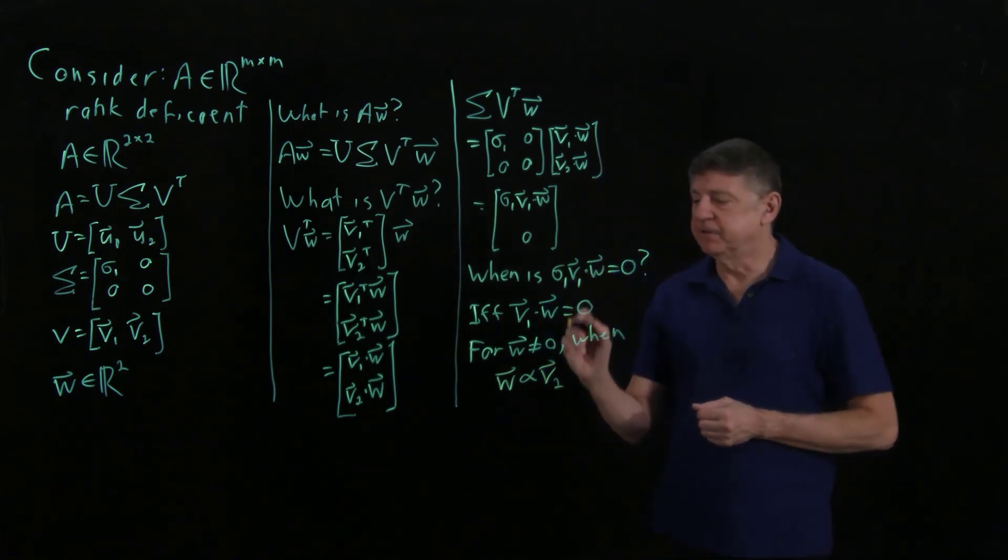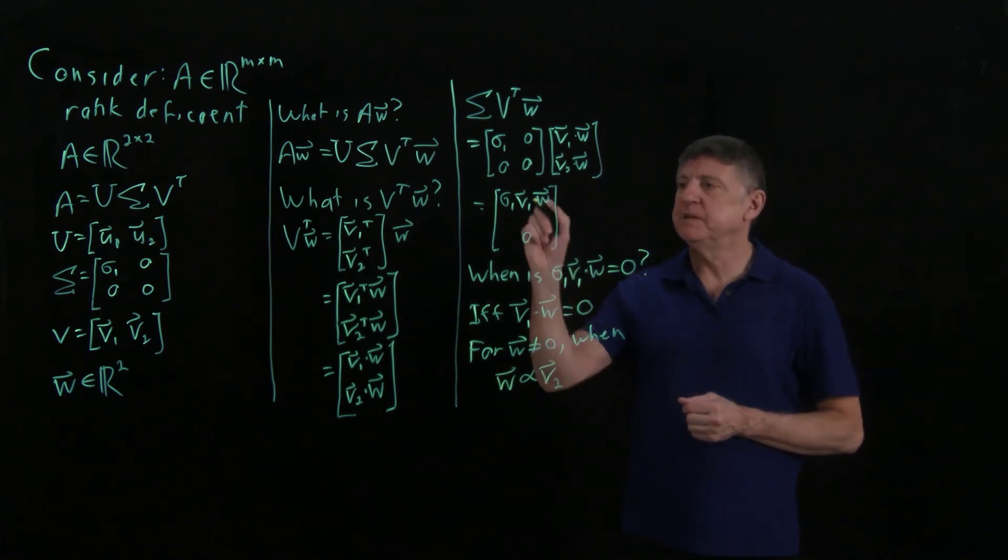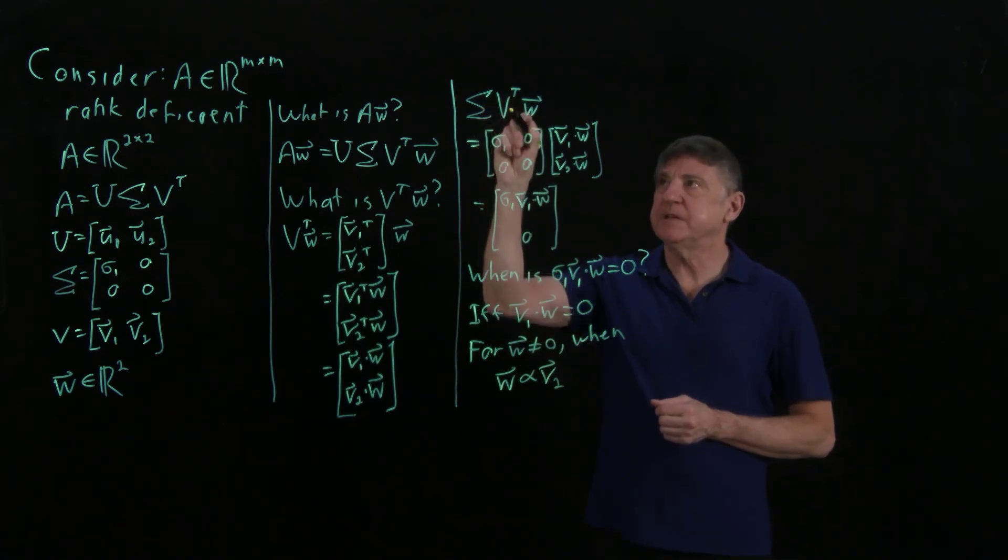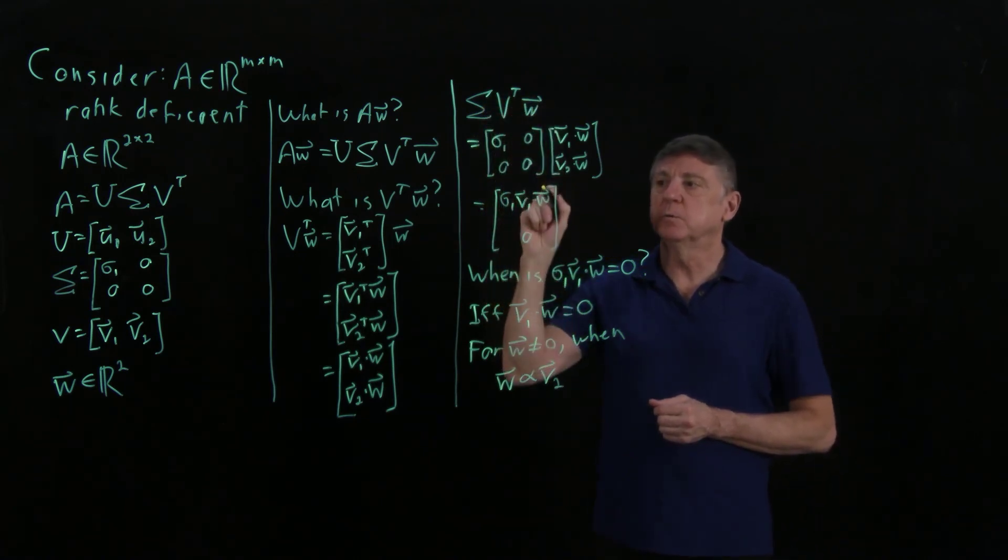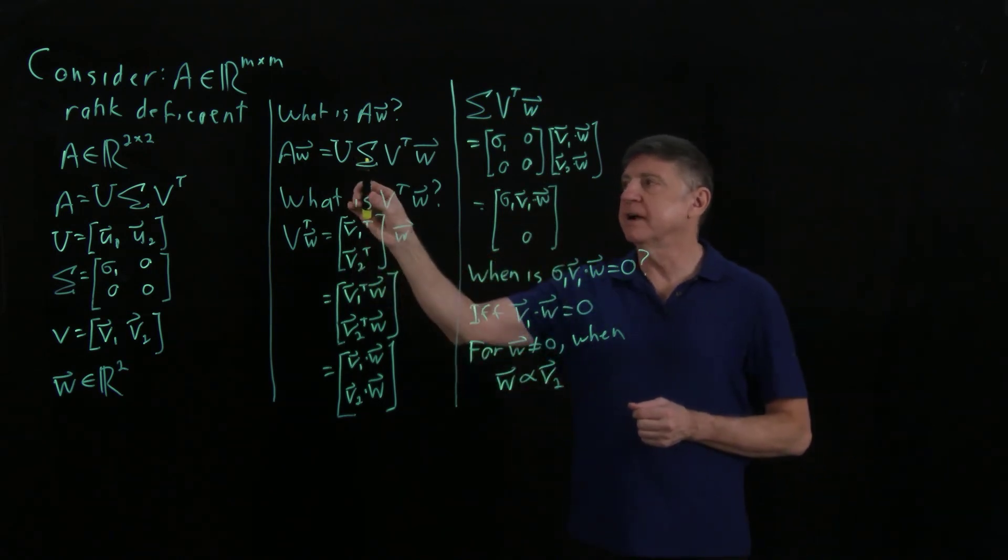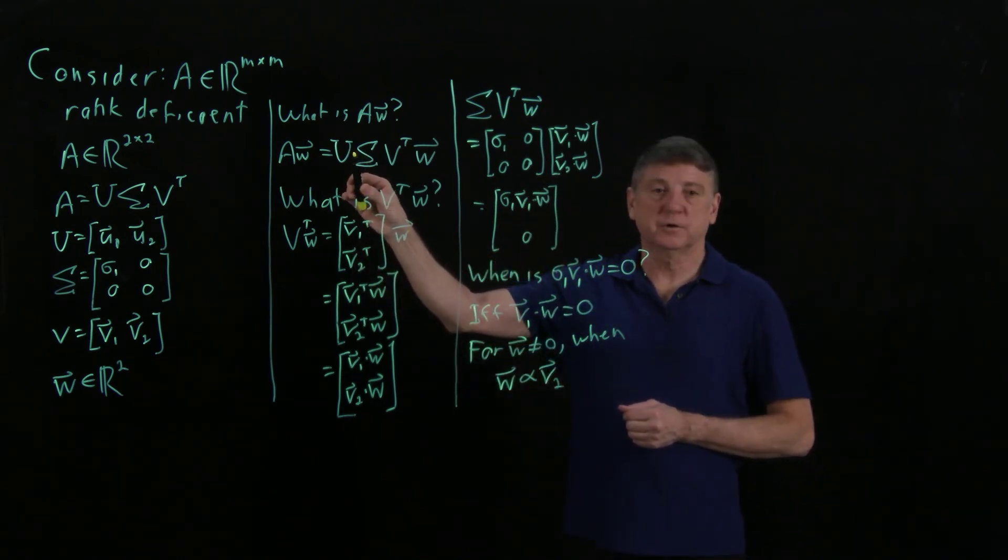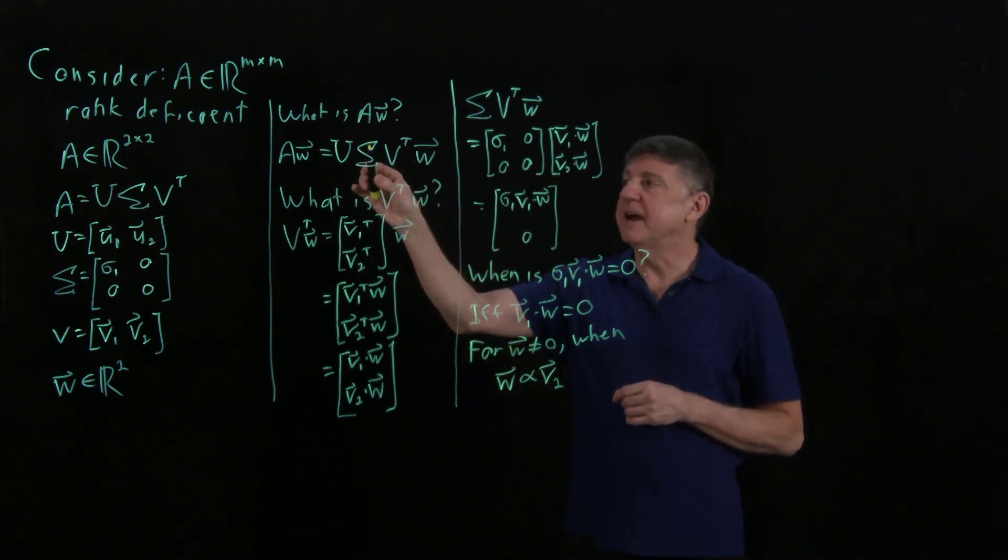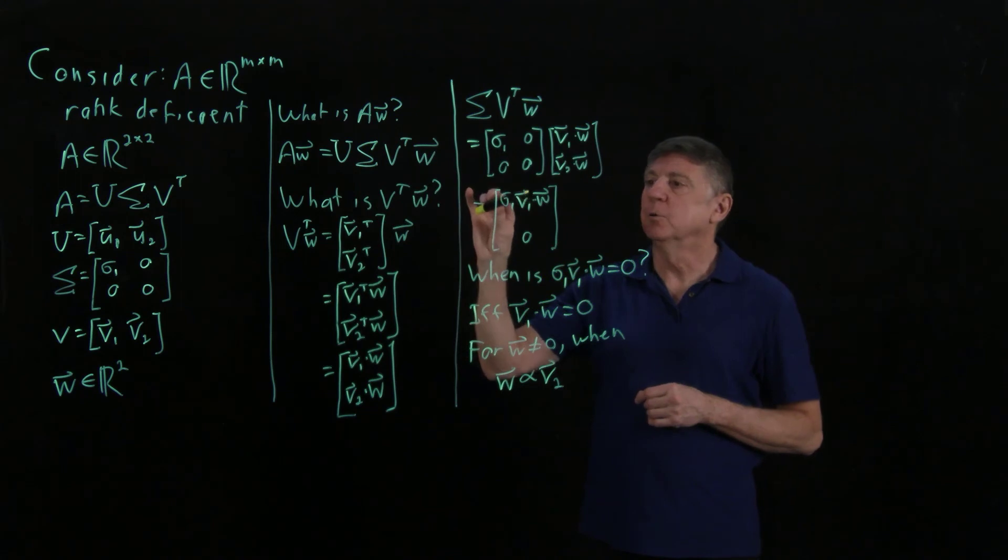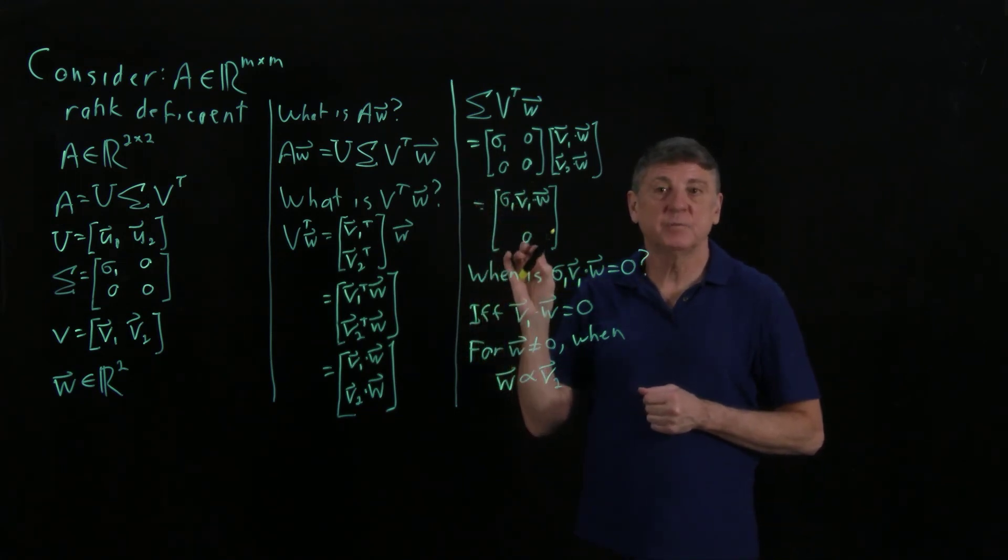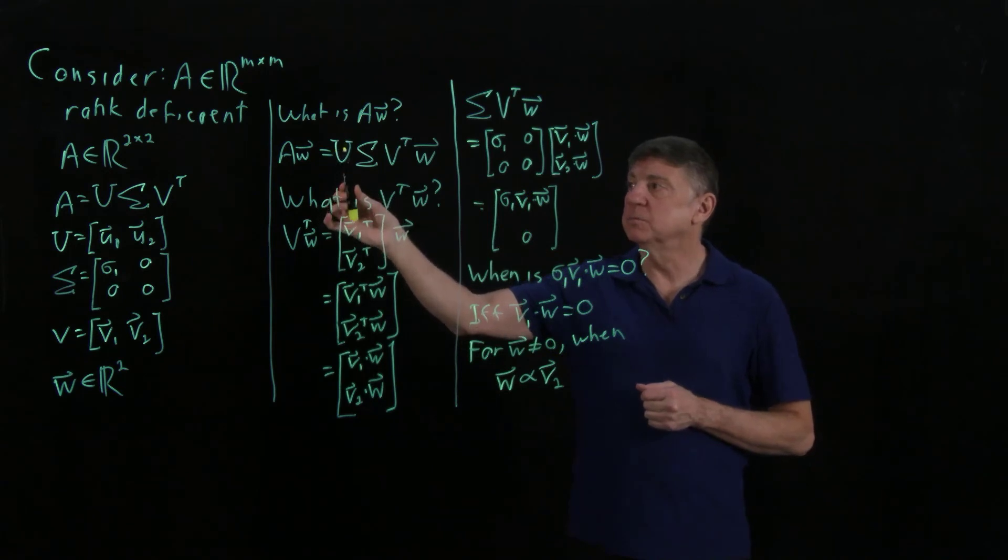And if W is proportional to V2, then this will, then sigma times V transpose times W will be the 0 vector. And then when I multiply the 0 vector into an orthogonal matrix U, I'll get the 0 vector out. Because that will, that 0 vector will be, each entry will be the scalar of a linear combination of the columns of U.